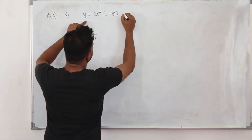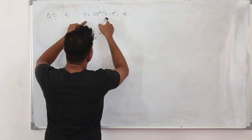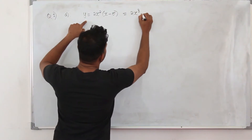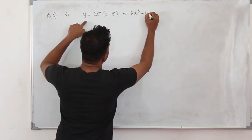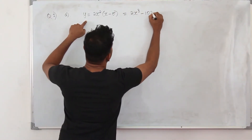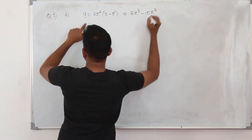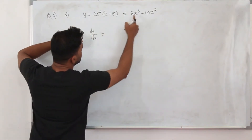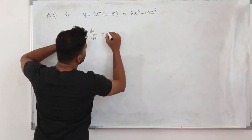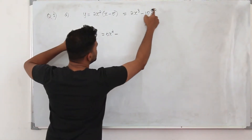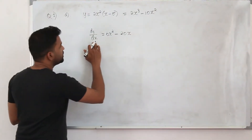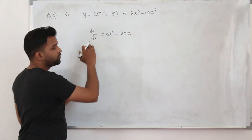First, expand the bracket. It becomes 2x cubed minus 10x squared. If you differentiate this, it will become 2 times 3, which is 6x squared, minus 2 times 10, which is 20x. That's the first derivative of the function.